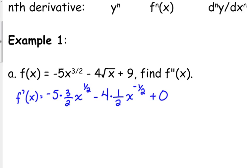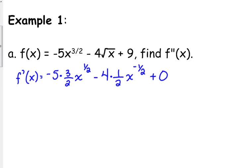I'll put it on there just because I have to simplify the other stuff anyways. I would go ahead and simplify these coefficients before I continue on to take the derivative again. So that gives us negative 15 over 2x to the 1 half minus 2x to the negative 1 half. That's the simplified version of the first derivative.